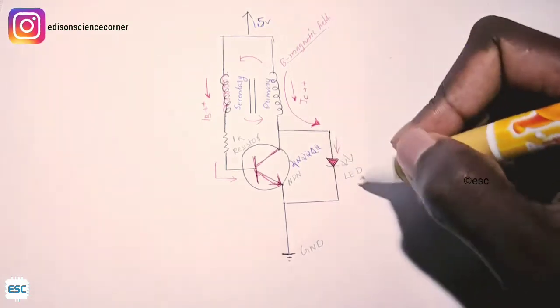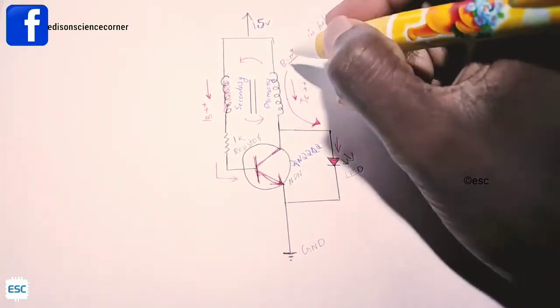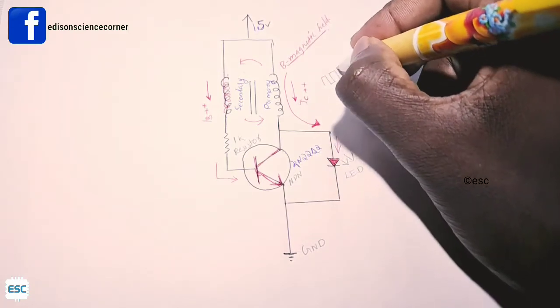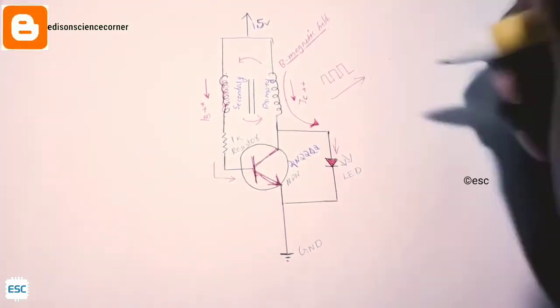This energy or the voltage is higher than the input voltage because this coil is in series with the input source. So there is a boosting in the voltage.